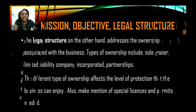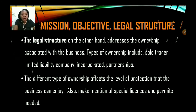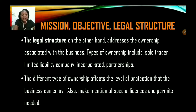The legal structure, on the other hand, addresses the ownership associated with the business. Types of ownership include sole trader, limited liability company, incorporations, and partnerships. The different type of ownership affects the level of protection that the business can enjoy. Also, ensure that you make mention of any special licenses or permits that are needed for the business to be operational.